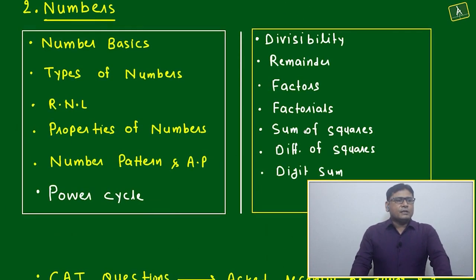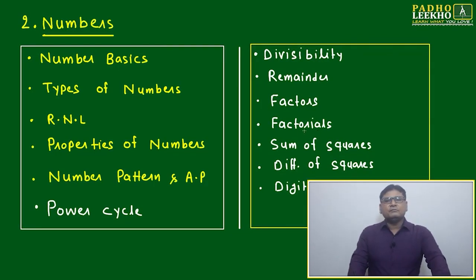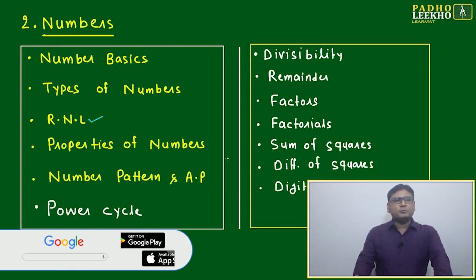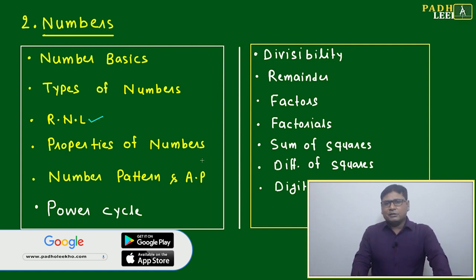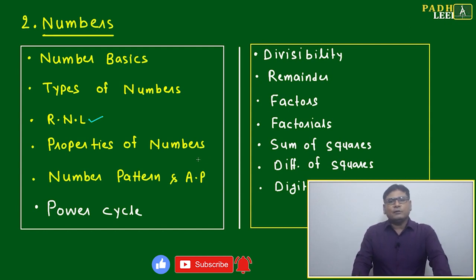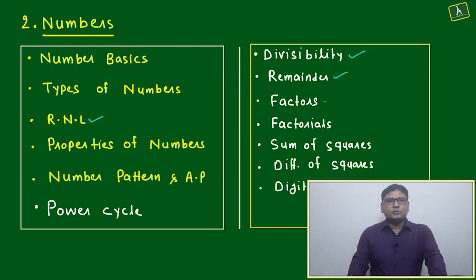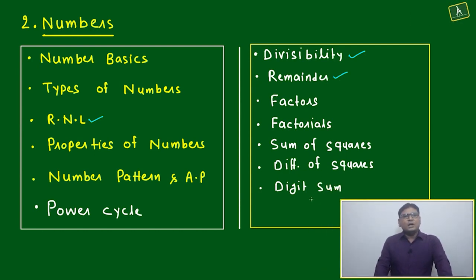What are the basic things or major subtopics we are dealing with in Numbers? Number basics, types of numbers, real number line, properties of numbers - many properties like even numbers, triangular numbers, natural numbers are there, and all properties are equally helpful. Which property you will be able to use for a particular time may be useful some other time in different perspective. Number pattern and arithmetic progression, power cycle - these are the major subtopics.